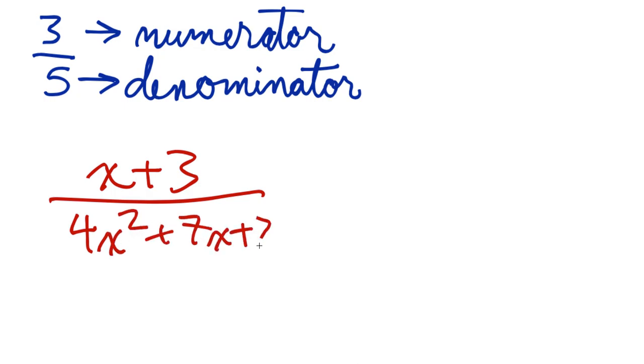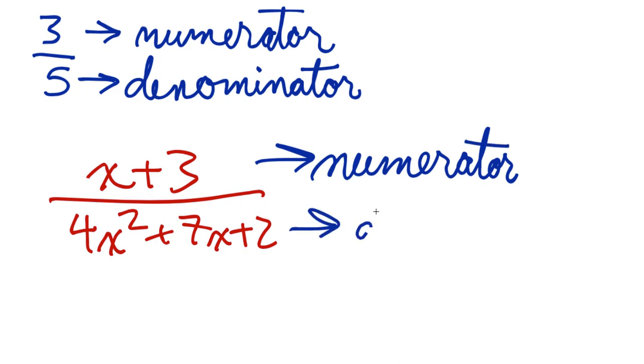So again, even in a rational expression, the top part you would still call the numerator. There's no avoiding it. And the bottom part, guess what that's called? Yeah, no surprises here, denominator.